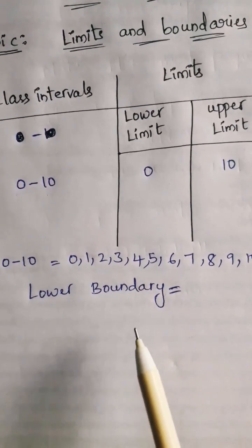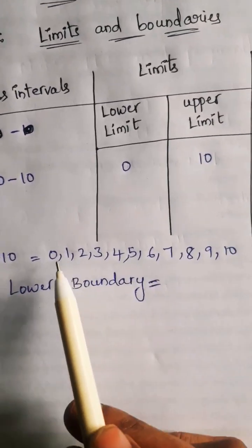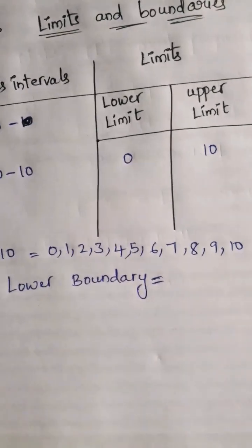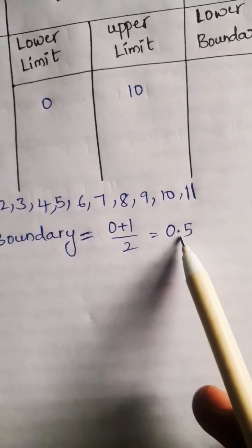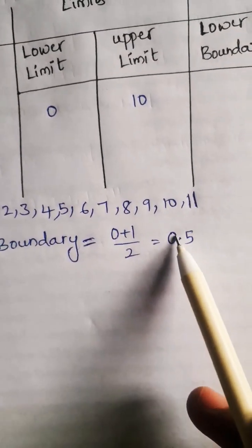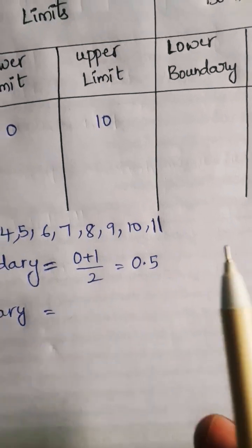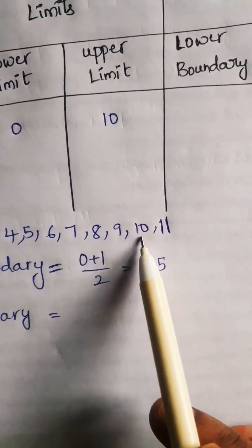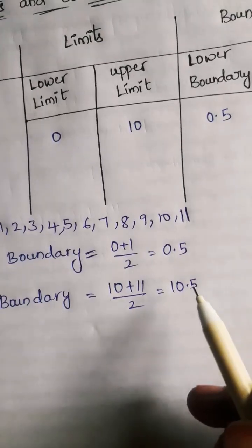For the lower boundary, we take 0 minus 0.5, so the lower boundary is negative 0.5. For the upper boundary, we take 10 plus 0.5, so the upper boundary is 10.5.